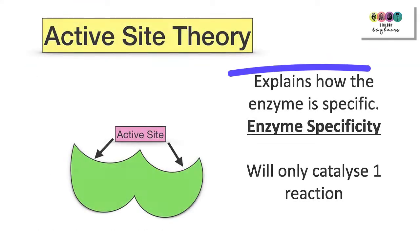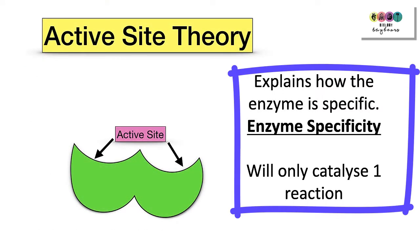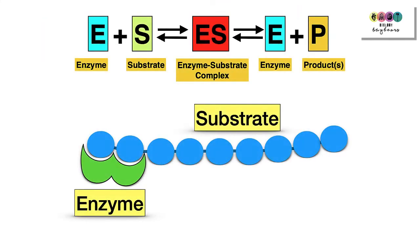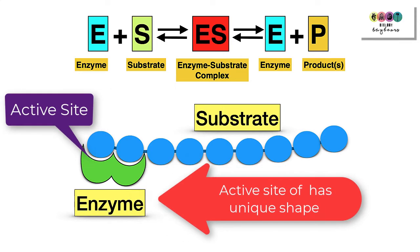Enzymes are highly specific, meaning they'll only catalyze one reaction or one type of reaction. We use active site theory to explain this. In an enzyme-controlled reaction, the enzyme has its uniquely shaped active site, and there is one type of substrate molecule that is complementary and can bind with the active site of that particular enzyme.